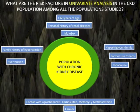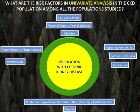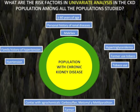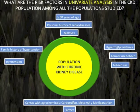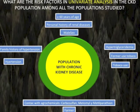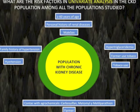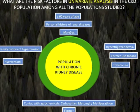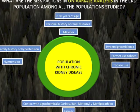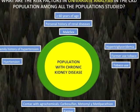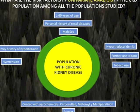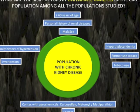Regarding CKD population and associated risk factors, we asked: what are the risk factors in univariate analysis in the CKD population? In univariate analysis, increased age, personal history of renal disease, male sex, family history of hypertension, hypertension, hypertriglyceridemia, tobacco use, former tobacco use, agrochemical exposure, and agricultural occupation were all significantly associated with the presence of CKD.